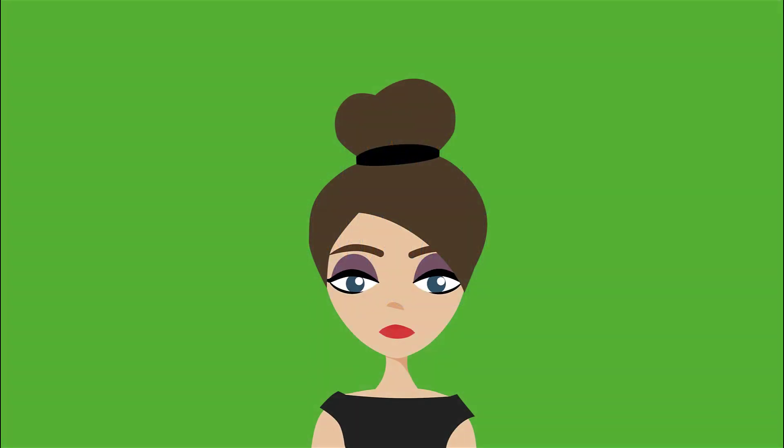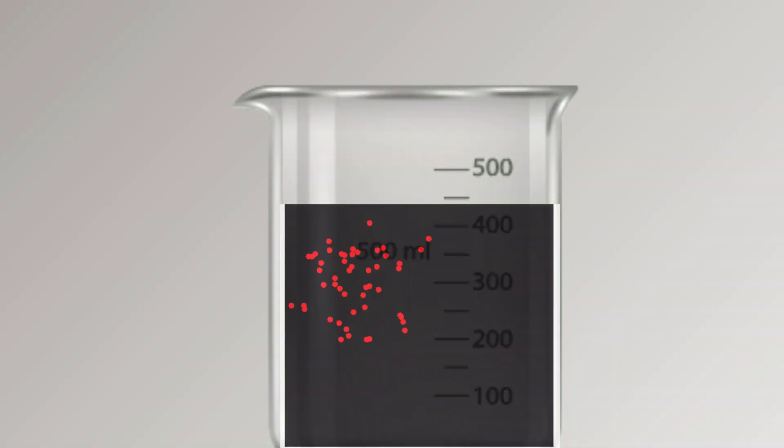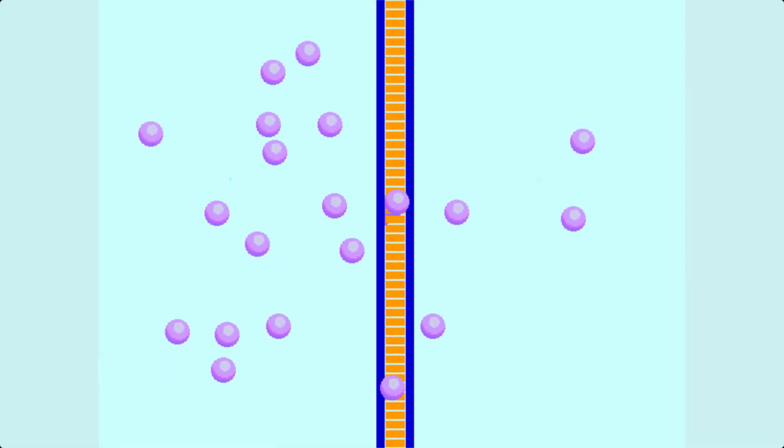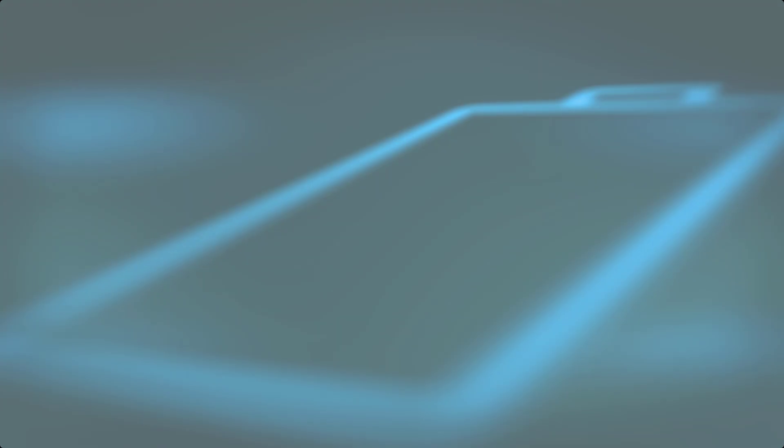How are osmosis and diffusion similar? They are similar in that both osmosis and diffusion equalize the concentration of two substances. Both diffusion and osmosis are passive transport processes, which means they do not require any input of energy to occur.